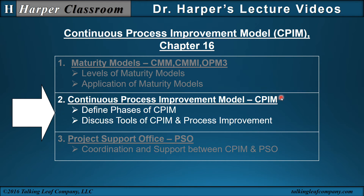Two, he then specifically addresses the CPIM, the Continuous Process Improvement Model, which has similarities to a maturity model but also has important differences. He defines phases of the CPIM as different from the levels of a maturity model in that the phases represent repeatable objectives in a feedback system instead of levels to be achieved in a maturity model. And with each feedback iteration, the processes within an organization are continually improved. Wysocki then discusses process improvement tools that can be used within each of these defined phases.